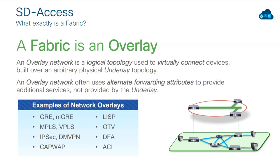SD Access is not the only known overlay. We've worked with other overlays like GRE, MPLS, DMVPN, CAPWAP, and ACI for data center. To implement the overlay, we need to add additional headers with extra information to allow reachability. We've worked with VLAN ID and MPLS tags representing certain bits in the header. Now we will have extra headers for VXLAN and LISP — these are the protocols used in SD Access.